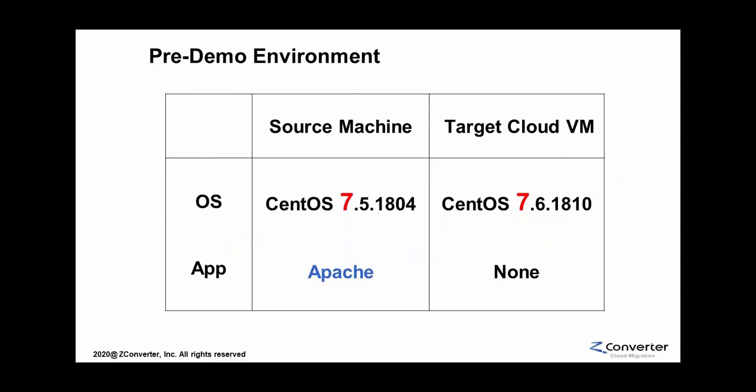Pre-demo environment. As you can see in this demo, our source and target machines are running different minor versions of CentOS 7. The Apache web server is installed on the source VMware virtual machine only, to later show a successful migration. In our post-demo environment, you can see that both source and target are now running CentOS 7.6.1810, which was originally the OS of the source VMware virtual machine only. Also, the Apache web server is now migrated from the VMware to the target OpenStack virtual machine. The migration was completed successfully.